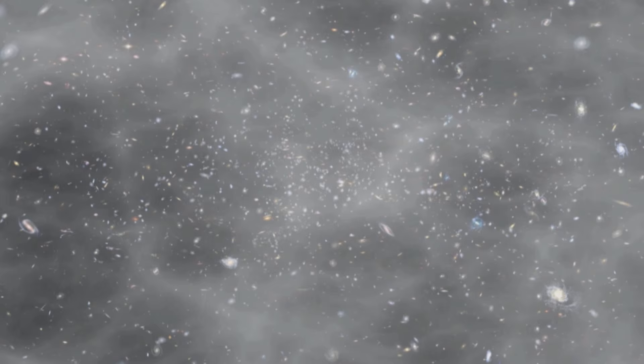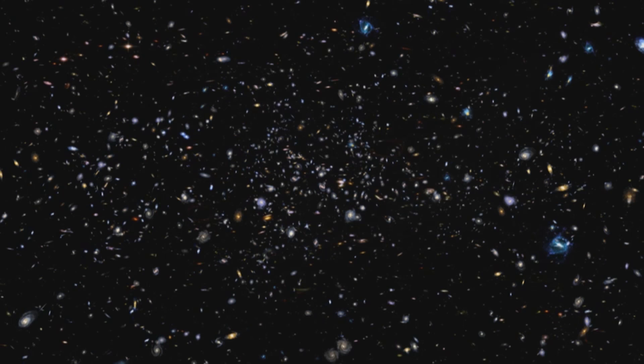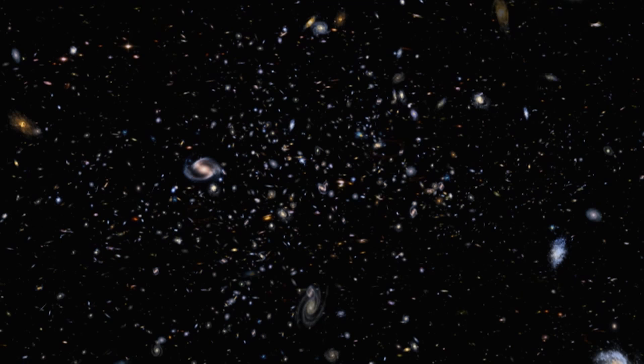So what happens is that gravity amplifies these ripples in the matter distribution. And so in an expanding universe, two things happen. Gravity likes to make lumps. And it also turns out that gravity likes to make holes. If you start a hole, gravity will make the hole bigger. And that makes the structure that we observe today.